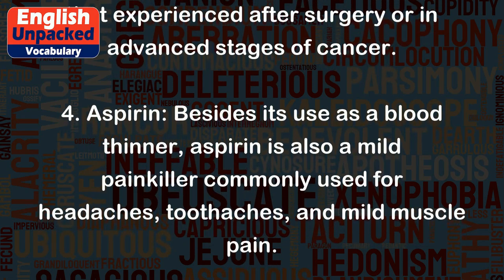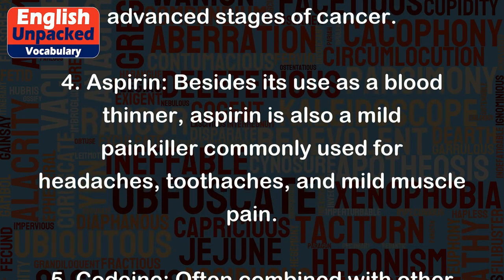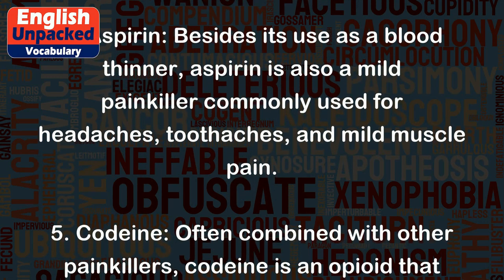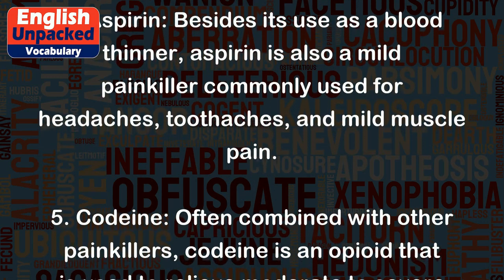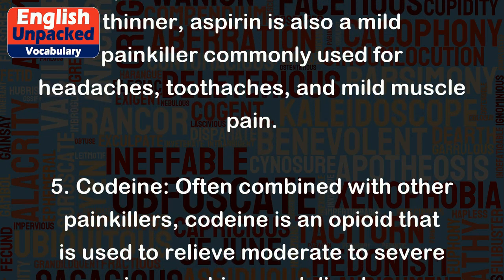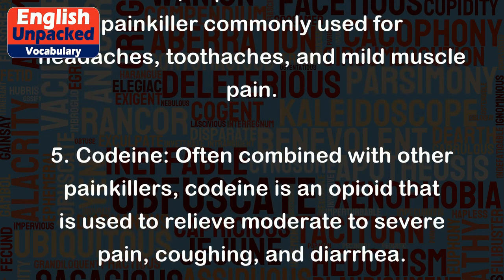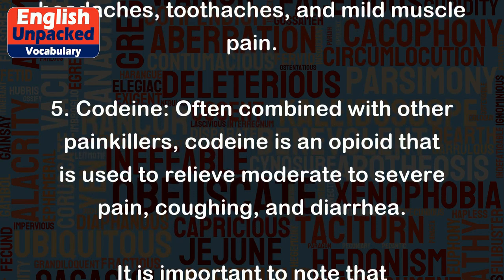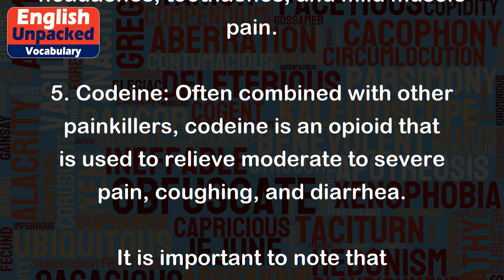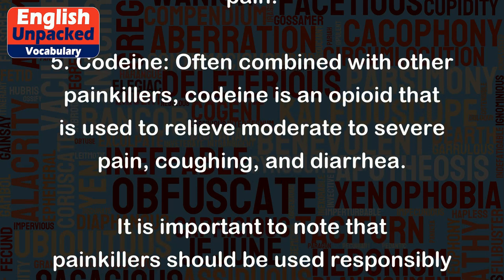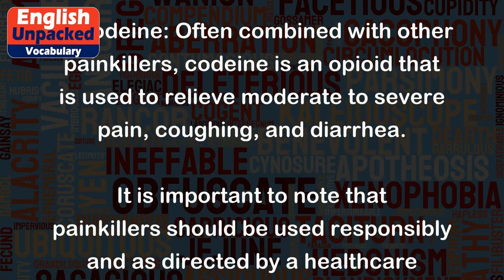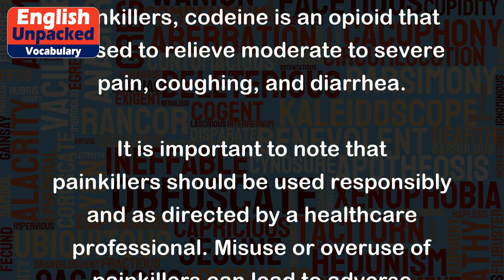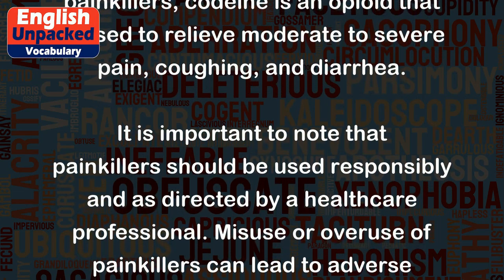4. Aspirin — besides its use as a blood thinner, aspirin is also a mild painkiller commonly used for headaches, toothaches, and mild muscle pain. 5. Codeine — often combined with other painkillers, codeine is an opioid used to relieve moderate to severe pain, coughing, and diarrhea.